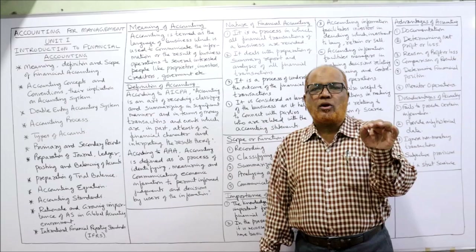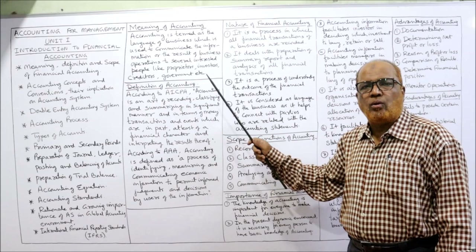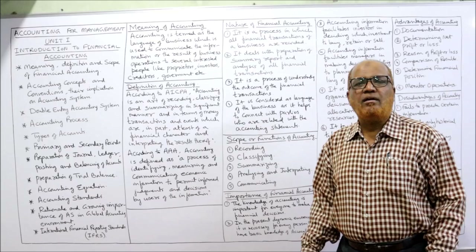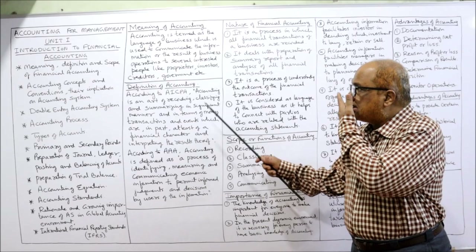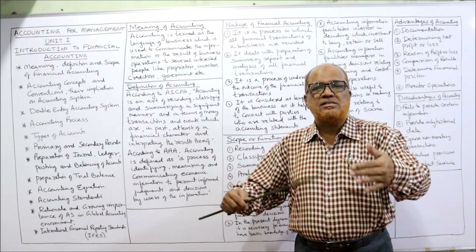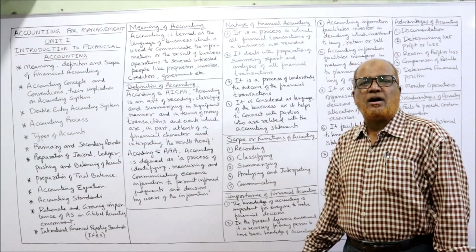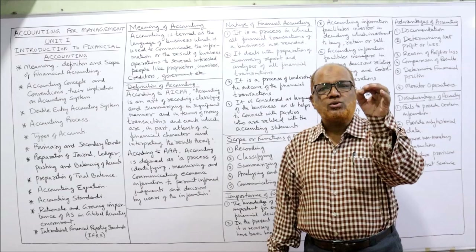Different authorities have given different definitions, but the most important and worldwide accepted definition is from the AICPA — the American Institute of Certified Public Accountants. According to AICPA, accounting is an art of recording, classifying, and summarizing. It is an art, meaning that by continuous practice a person will become perfect in accounting.